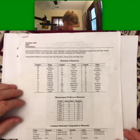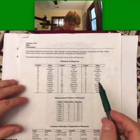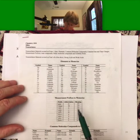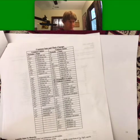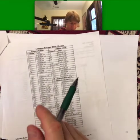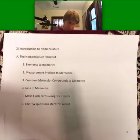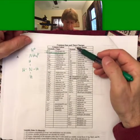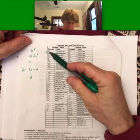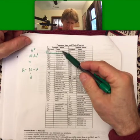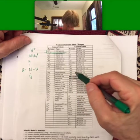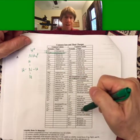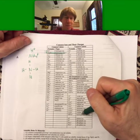So I've got my nomenclature sheet here. It says elements to memorize, prefixes, common molecular compounds, and common ions to memorize as well. You want to know the formula and the name. Looks like you do not have to memorize hydronium right there from the previous note that I've taken, but you do have to memorize everything else.